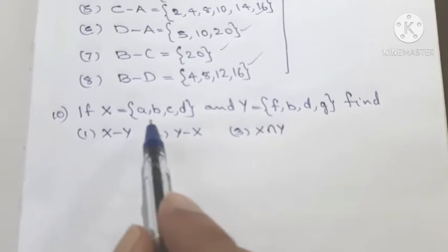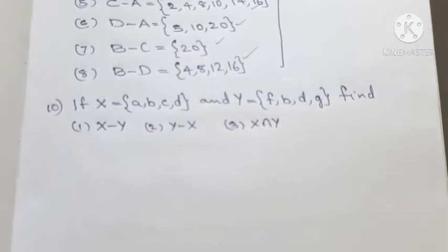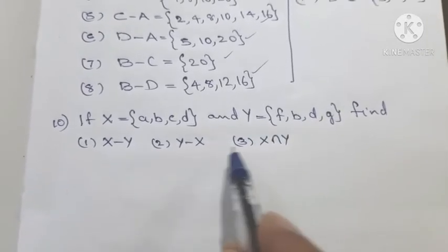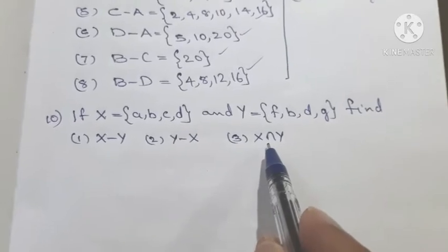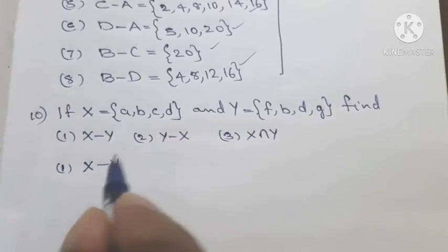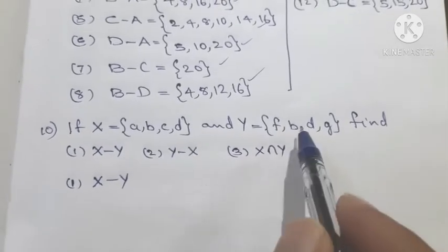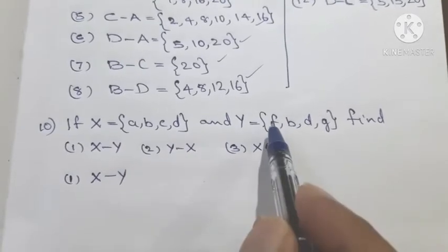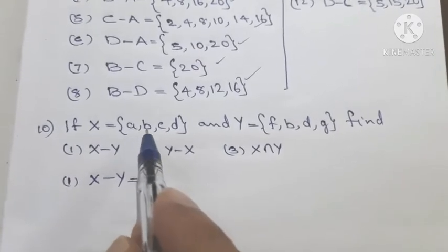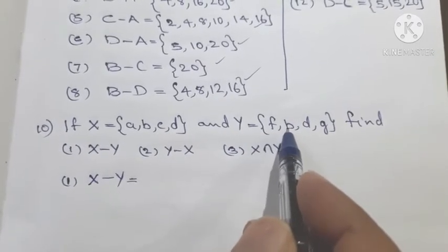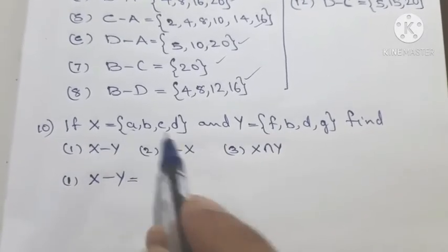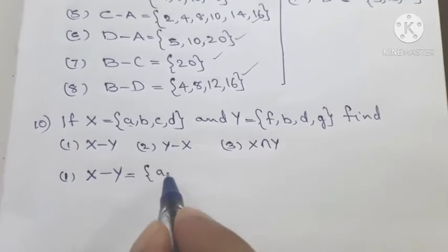New problem: If X equals the set {a, b, c, d} and Y equals the set {f, b, d, g}, find X minus Y, Y minus X, and X intersection Y. For X minus Y, take elements of X and remove those common with Y — b and d are common, so X minus Y equals {a, c}.